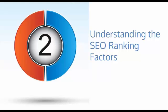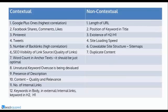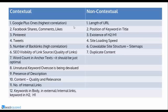Now I've come to the different SEO ranking factors. These are the ranking factors that found importance in the correlation analysis that Search Metrics did. I've divided them into contextual and non-contextual factors. Google+ Ones have the highest correlation — they are the most important ones. Other social shares like Facebook, Pinterest, and Tweets also rank highly in the research. Number of backlinks has a pretty good correlation, but it's not just the number — the quality of links is also very important. Unnatural keyword overuse is being devalued and will be penalized. Presence of a description is a very positive thing. Content has to be quality and relevant. Number of internal links is also important, as are keywords in the body, in external and internal links, and in H2 and H1 tags.